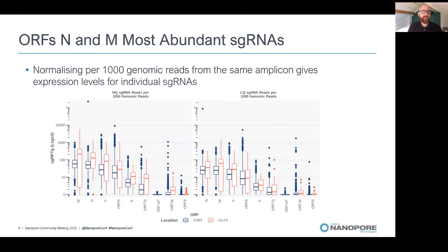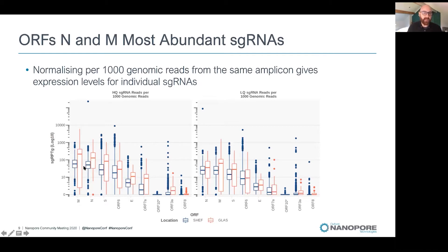If we count the number of subgenomic RNA reads and normalize per thousand genomic reads from the same amplicon, we get a measurement of subgenomic RNA expression level that can be compared across samples and cohorts. Subgenomic RNAs M and N are the most expressed, which follows what is known in the literature about SARS-CoV-2 subgenomic RNA expression. We also see good agreement between two different centers — the Sheffield dataset of around 1,000 sequences and the Glasgow dataset of around 50.